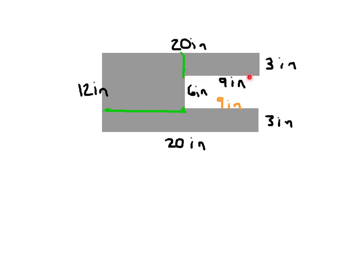The top piece is 3 times 9 — the sides 9 and 3 completely describe that area — so it's 27 square inches. The next piece is also straightforward: it's 20 by 3, where those two sides are completely labeled as part of that rectangle. So I write 20 times 3 there.